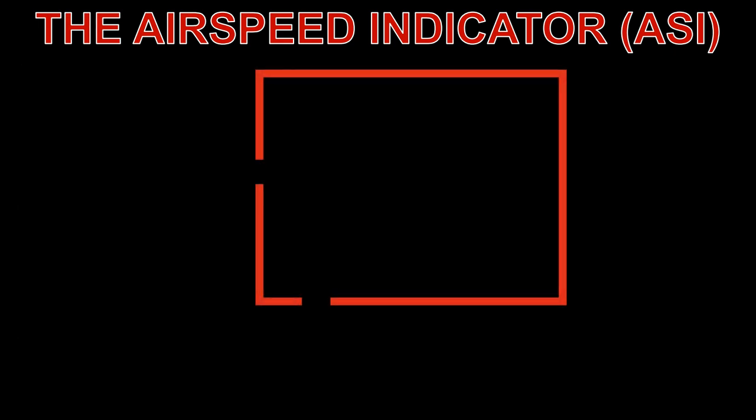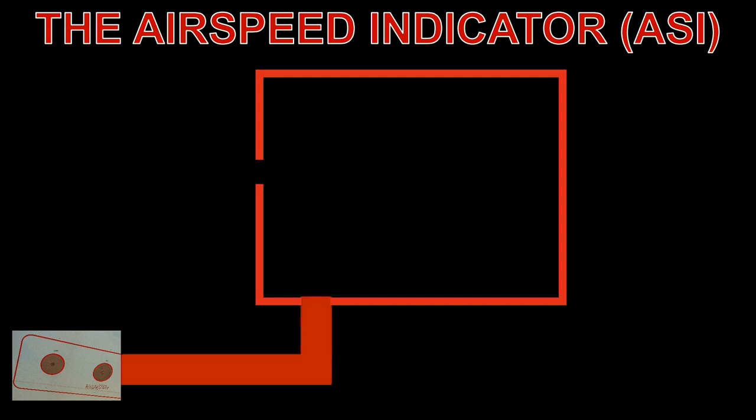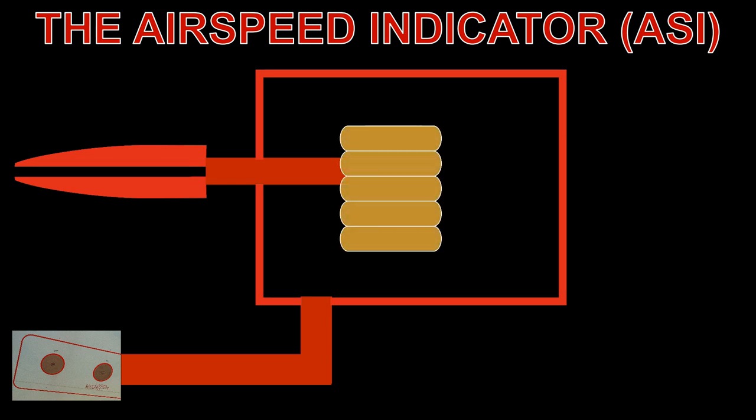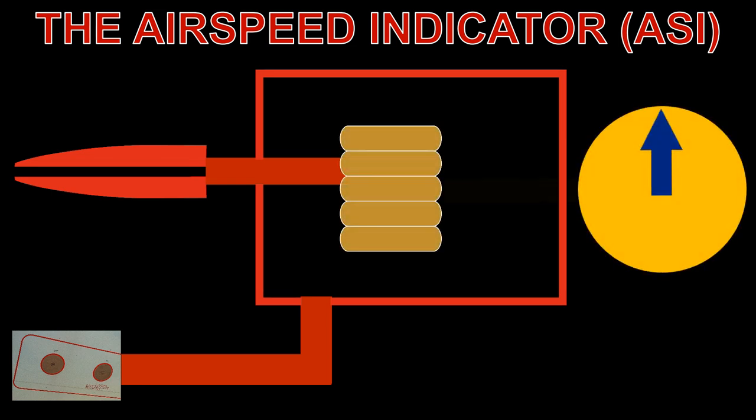Static pressure from the static port enters the ASI case, while total pressure from the pitot tube enters and flexes the diaphragm, which is connected to the ASI pointer via mechanical linkage. The pressures are equal when the aircraft is stationary on the ground, and hence shows a reading of zero.